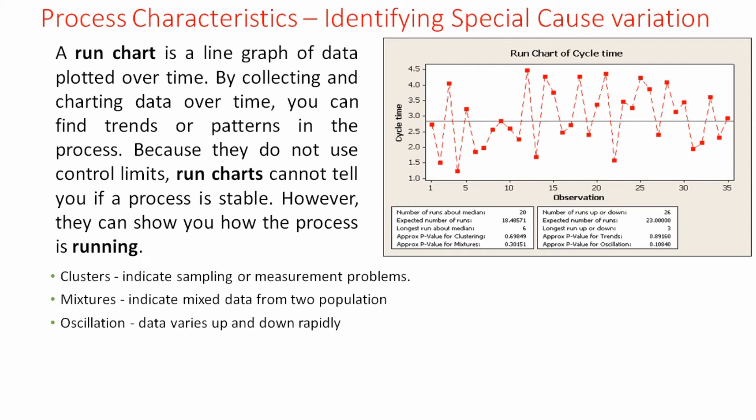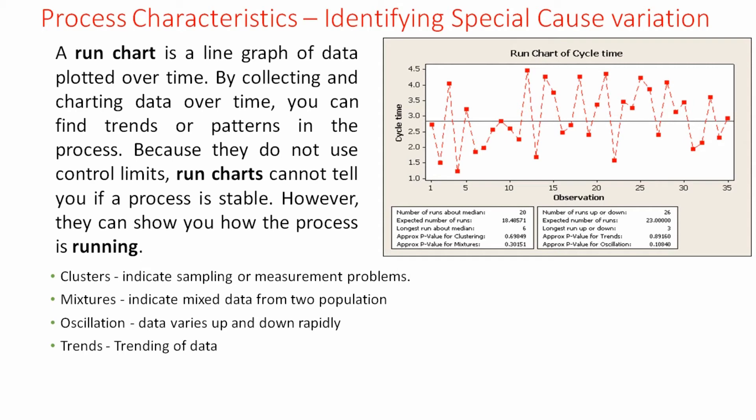Oscillation: Data varies up and down rapidly. Trends: Trending of data. It could be an upward trend or a downward trend. P-value should be greater than 0.05 for clusters, mixtures, trends and oscillations to say that there are no special causes present in the system.